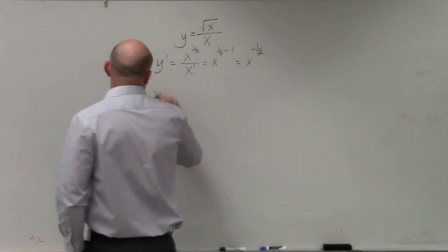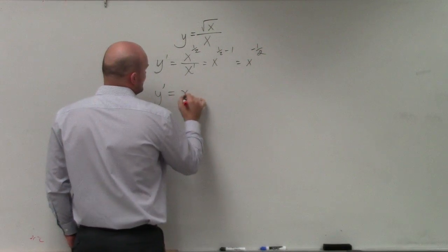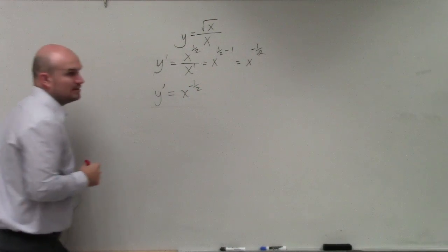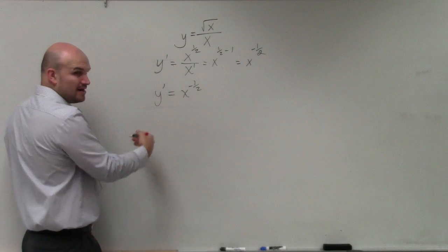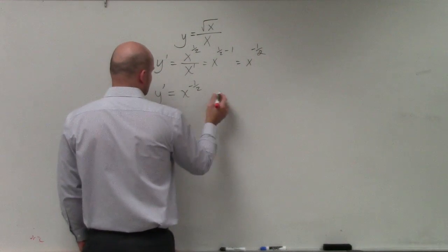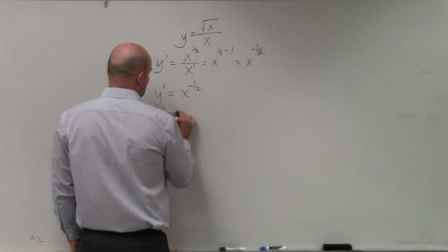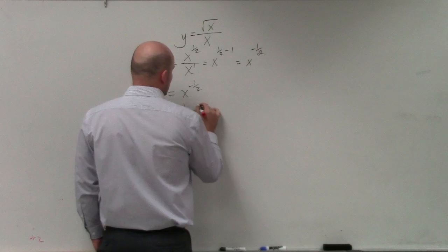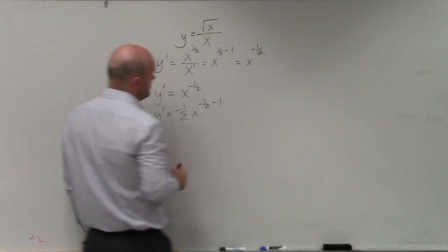So now, if I'm going to use the power rule as x to the negative 1 half, remember we bring it down, shake it down, which is subtracting by 1. So therefore, y prime equals negative 1 half x to the negative 1 half minus 1.